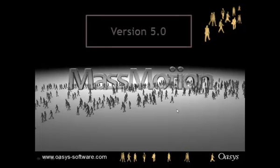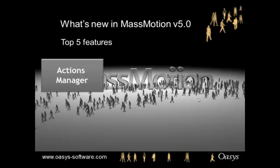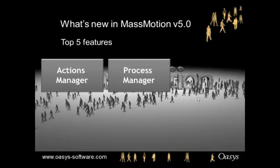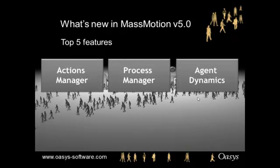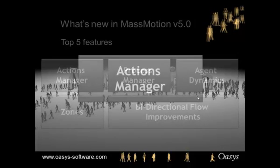MassMotion version 5 is the latest release of pedestrian simulation software from Oasis. We have introduced several new features that will improve the overall simulation experience for our users. The most significant new features allow the user to improve and control a simulation and to describe the agent's behavior in even more detail.